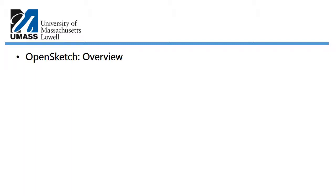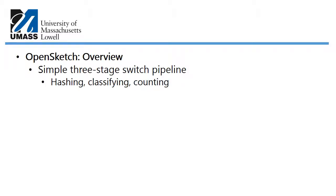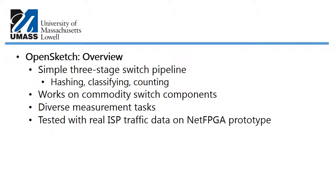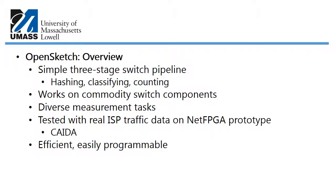OpenSketch provides a simple three-stage switch pipeline consisting of a hashing stage, a classification stage, and an accounting stage. It's designed to work on commodity switch components and to provide diverse measurement tasks. It's been tested with real ISP traffic data, particularly on a NetFPGA prototype using CAIDA packet traces.